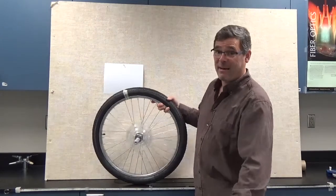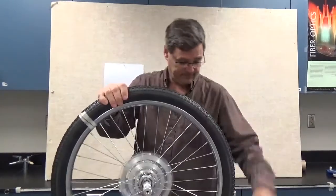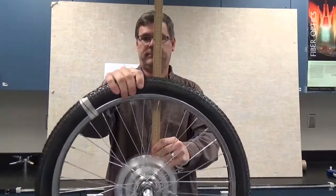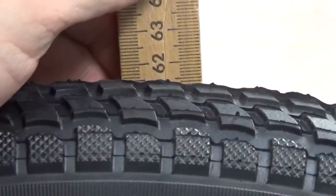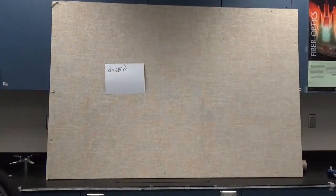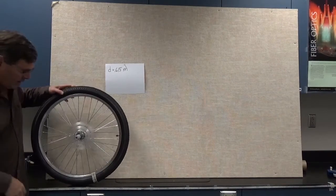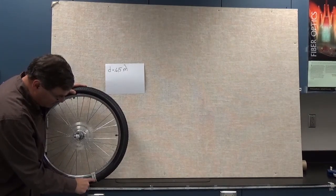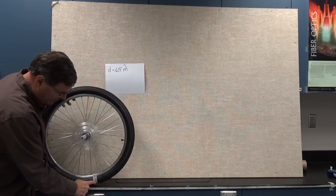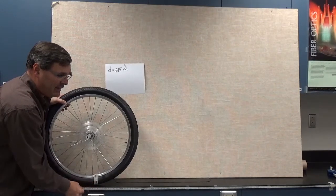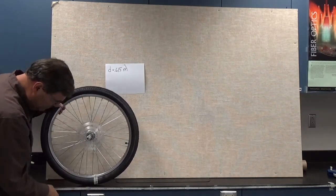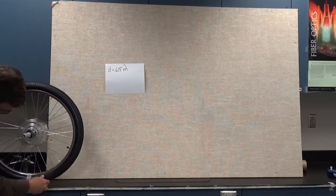Let's start by measuring the diameter of our wheel — it looks like 61 and a half centimeters. I've put a mark on the wheel that marks a spot on the outside edge, and along the edge of the countertop I've taped a tape measure, so I can measure in centimeters the distance the wheel moves in one complete rotation.